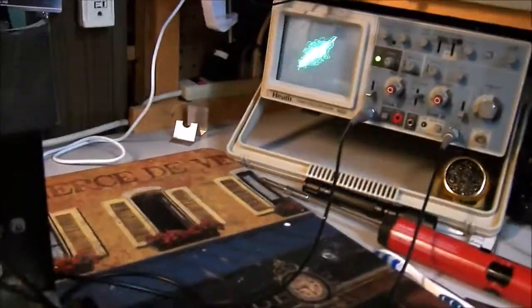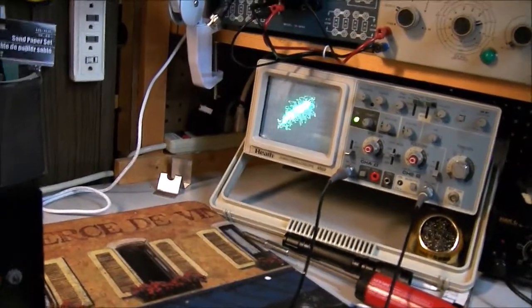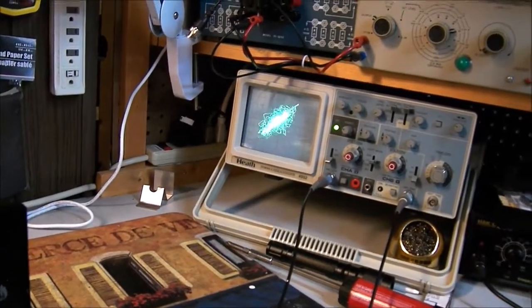In fact, you could test amplifiers for distortion between channels. If you feed a mono signal into both channels using XY mode, you should get the straight line.